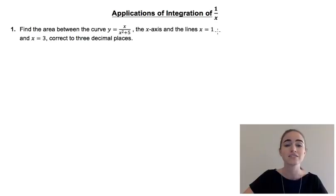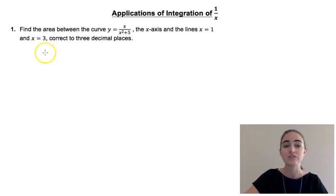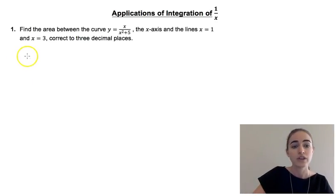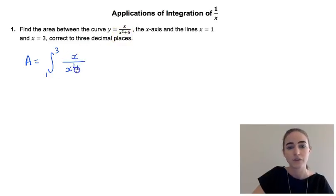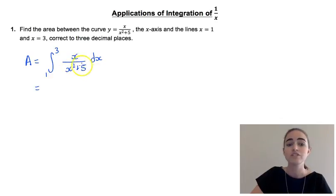Our first question asks us to find the area between the curve y equals x over x squared plus 5, the x-axis and the lines x equals 1 and x equals 3, correct to three decimal places. To calculate the area we're going to find the integral between 1 and 3 of x over x squared plus 5 dx. Now the numerator here is almost the derivative of the denominator, but not quite.